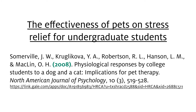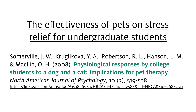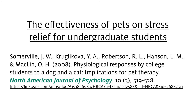You'll also want to look for the title. If it's a book, it'll be italicized. If it's an article, the title might be in quotation marks depending on the style. In this case, because the citation is in APA, you can see that the title, 'Physiological Responses by College Students to a Dog and a Cat: Implications for Pet Therapy,' is in sentence case. You may have noticed that there's another title that is italicized here — North American Journal of Psychology — which is the title of the publication.